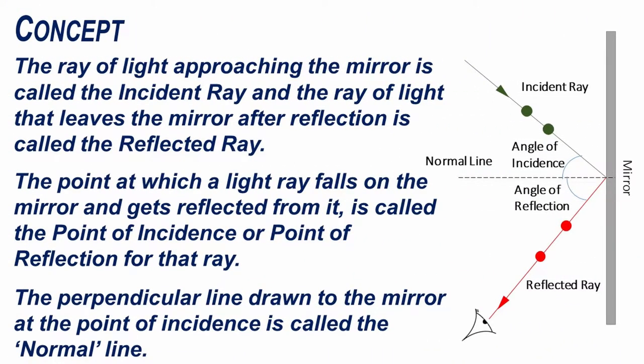The ray of light approaching the mirror is called the incident ray. The point at which a light ray falls on the mirror and gets reflected from it is called the point of incidence or the point of reflection for the ray. The perpendicular line drawn to the mirror at the point of incidence is called the normal line.